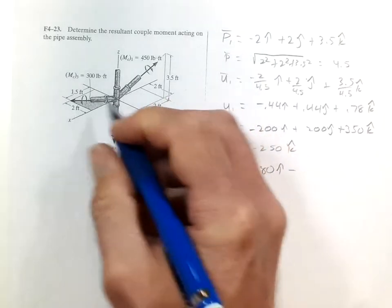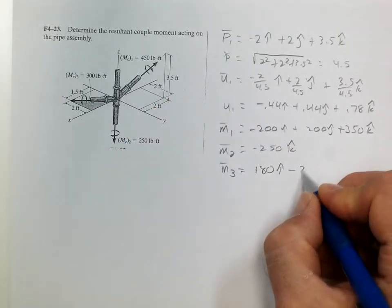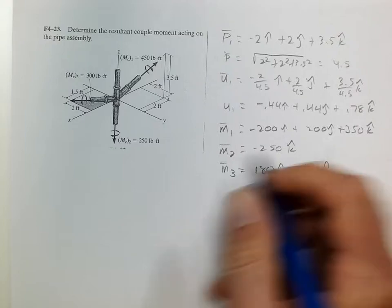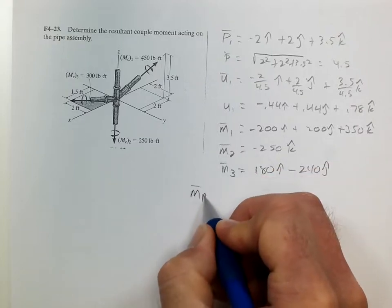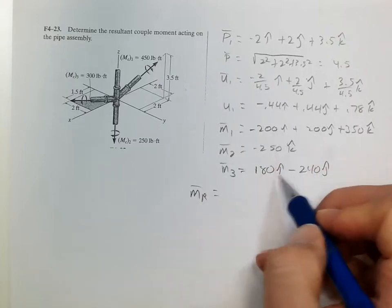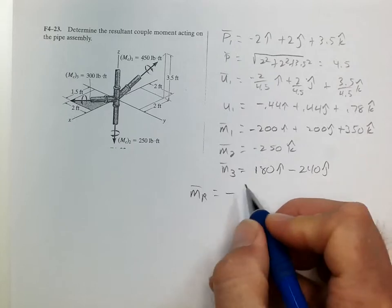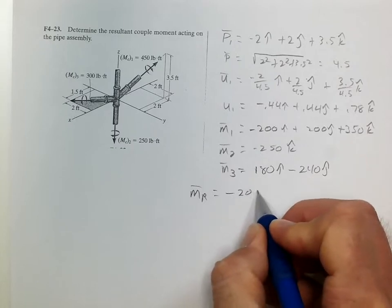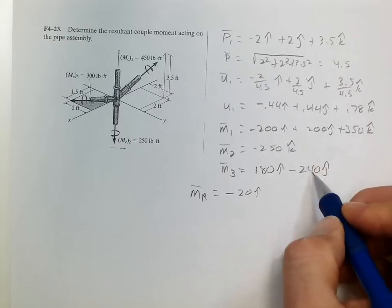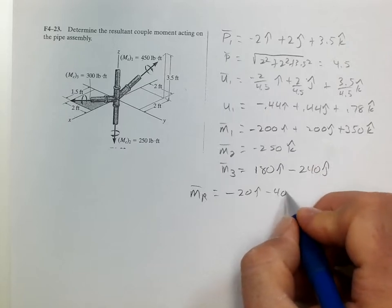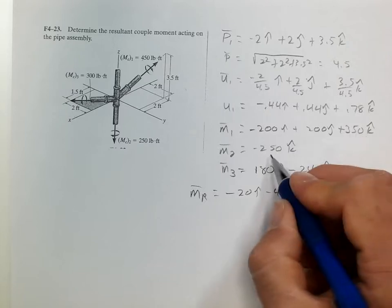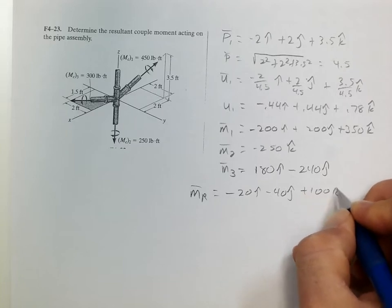Now all we have to do to get the resultant moment is add negative 200 plus 180, which gives us negative 20 in the i. 200 minus 240 is negative 40 in the j. 350 minus 250 is 100 in the k.